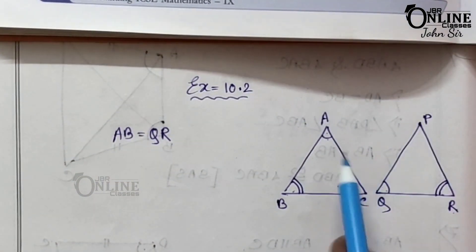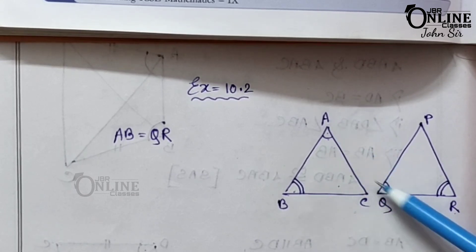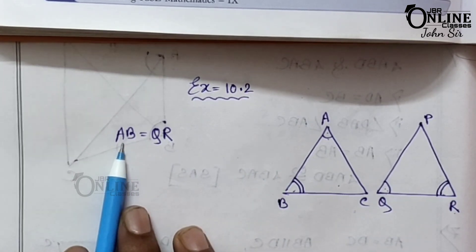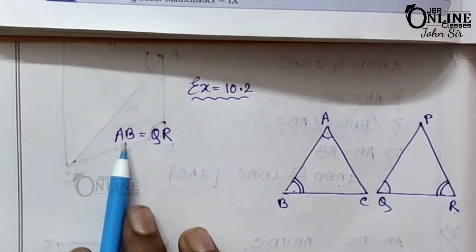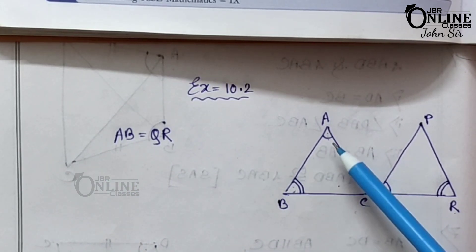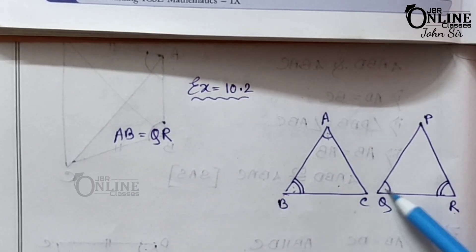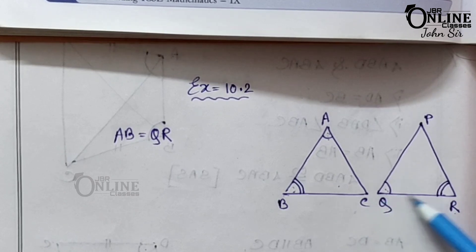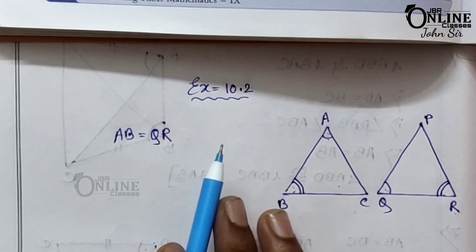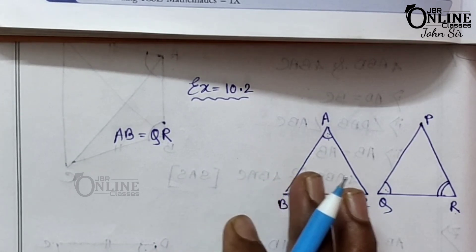So here there are two triangles ABC and PQR. In these two triangles, angle A equal to angle Q and angle B equal to angle R. That means AB equal to QR. As AB is the side included between the two angles — angle A and angle B — the included side is AB. And for angle Q and angle R, the included side is QR. So AB equal to QR. The reason is: two triangles are congruent if their corresponding two angles and included sides are equal.